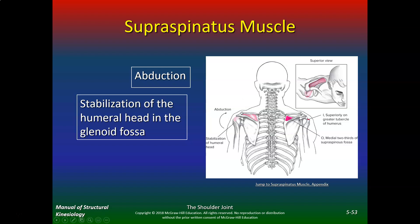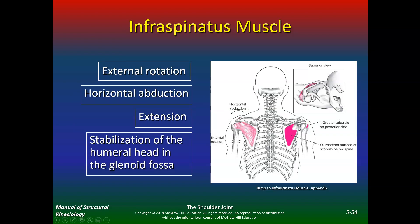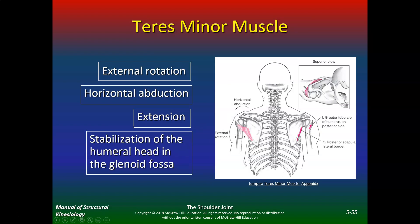Subacromial impingement occurs because the acromial structure pinches just subacromially. Infraspinatus does external rotation, horizontal abduction, extension, and stabilization of the humeral head in the glenoid fossa. Teres minor does external rotation, horizontal abduction, extension, and stabilization of the humeral head in the glenoid fossa. Make sure you know the location of each muscle, what it does, and how it stabilizes the humeral head.